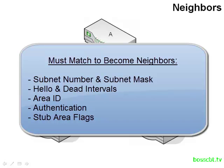Also, the hello and dead intervals have to match between two routers, and the OSPF area ID has to match. There are even more requirements — if you're using authentication, you obviously have to be able to authenticate in order to become a neighbor. There's also something known as a stub area flag, which is outside the scope of the CCNA study, but we're mentioning it here for a complete picture. Just put that one on hold for now.